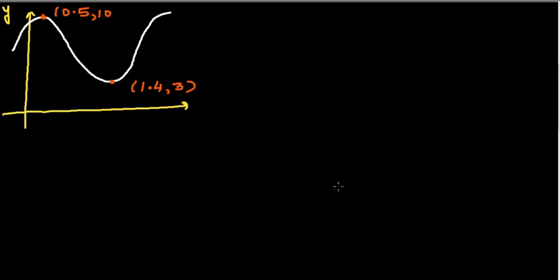Let's write the equation of this graph, which is a sine or cosine graph. Generally, you'll be given the maximum or minimum in this type of situation. We know the maximum and minimum coordinates: the maximum is at (0.5, 10) and the minimum is at (1.5, 3). So the maximum y-value is 10.